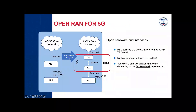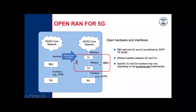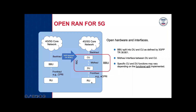In 3GPP guidelines, the baseband unit was split into two parts: the distributed unit and the centralized unit. Since they are two different components, they can be placed on different COTS servers, and there should be an open mid-haul interface connecting the two. Connecting the CU, DU, and also towards the core network, we have the RAN Intelligent Controller — a separate block that orchestrates communication among the different components. Whatever functions are assigned to the RU, DU, and CU depends on the kind of functional split being implemented.